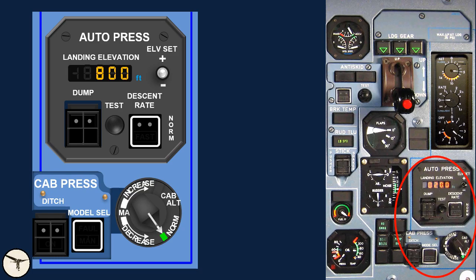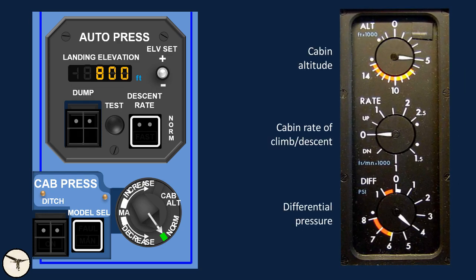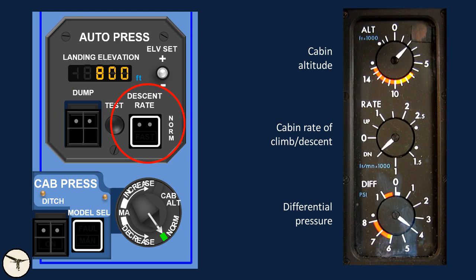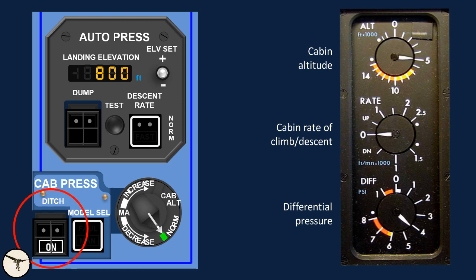Next, we have a panel for the automatic cabin pressurization system. Before takeoff, you set the elevation of the destination airport rounded to the nearest hundreds of feet, and the system does the rest. The dump push button is guarded and will open the outflow valves fully; it must only be used when called for by a checklist. The descent rate push button, when pushed in, increases the descent rate of the cabin pressure from 400 feet per minute to 500 feet per minute, used when descending at more than 2000 feet per minute for a prolonged time. The ditch push button closes the outflow valves and is used when about to land on water. The other controls are for manual operation of the system.